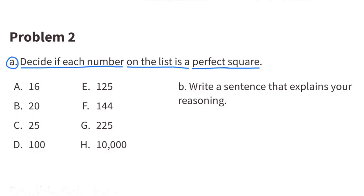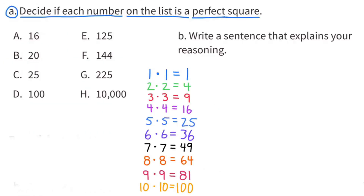Number 2. Decide if each number on the list is a perfect square. A perfect square is the product of a whole number multiplied by itself. For example, 1 times 1 equals 1 — that would be a perfect square. 2 times 2 equals 4 — that would be a perfect square, and so forth.